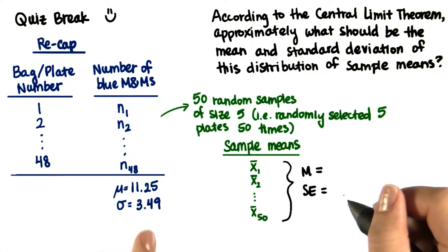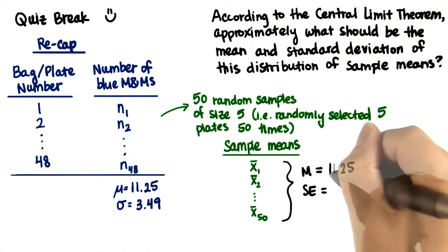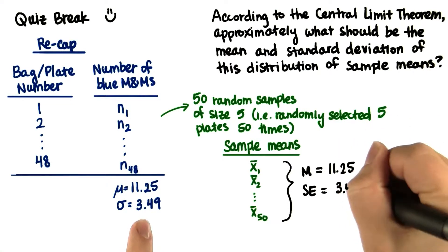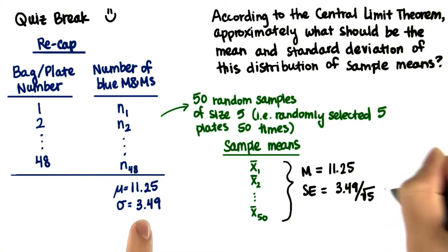Good job. So the mean should be the same as the population mean, and the standard error should be the population standard deviation divided by the square root of the sample size, which is about 1.56.